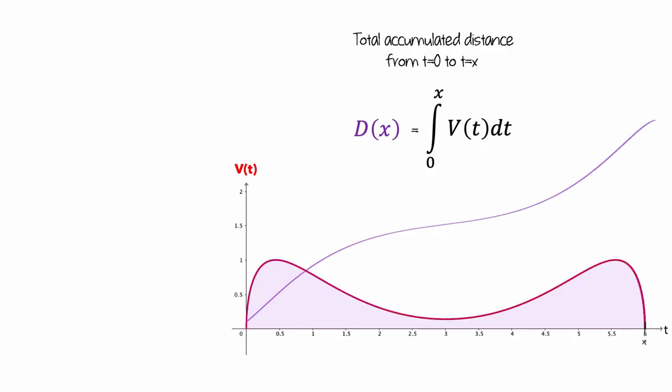The y value of the purple curve at each value of x is the amount of distance that we've accumulated between time 0 and time x. And this is also the area between the t-axis and the red curve between 0 and x.